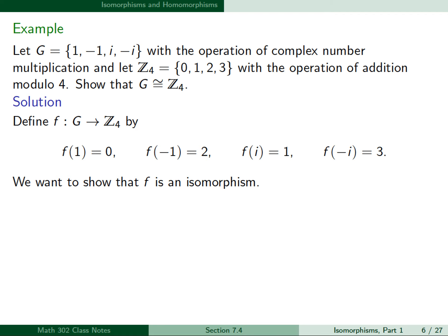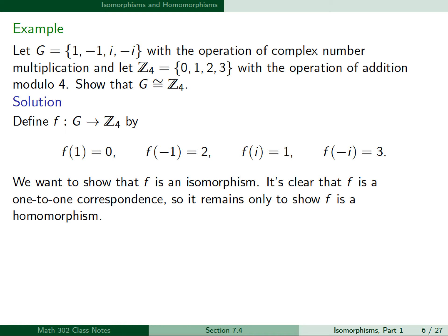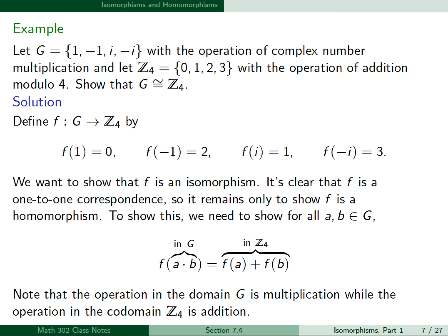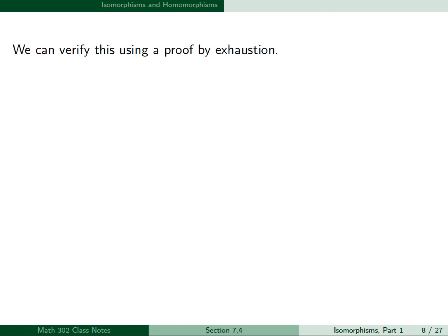We want to show that f is an isomorphism. It's clear that f is a one-to-one correspondence, so it remains only to show that f is a homomorphism — that for all a, b in G, f(a·b) = f(a) + f(b), where the operation in G is complex multiplication and the operation in Z4 is addition mod 4. We can verify this by using a proof by exhaustion. For instance, f(-1 · i) = f(-i) = 3 = 2 + 1 = f(-1) + f(i), satisfying the homomorphism condition for these two elements.